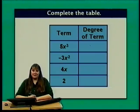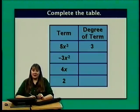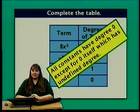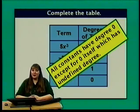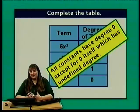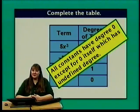In another example: 5x cubed has a degree of 3, negative 3x squared has a degree of 2, 4x has a degree of 1, and 2 has a degree of 0. All constants have degree 0, except for 0 itself, which has undefined degree. Since 0x cubed, 0x, and 0x to the 7th all reduce to 0, it's hard to say 0 has any specific degree — so we say 0 has undefined degree.